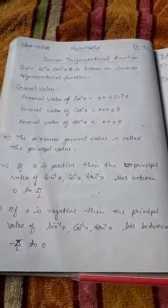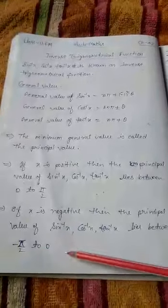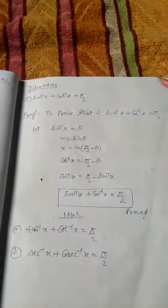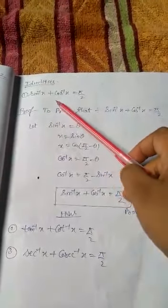Now comes to the identities. First: sine inverse x plus cos inverse x is equal to π/2.